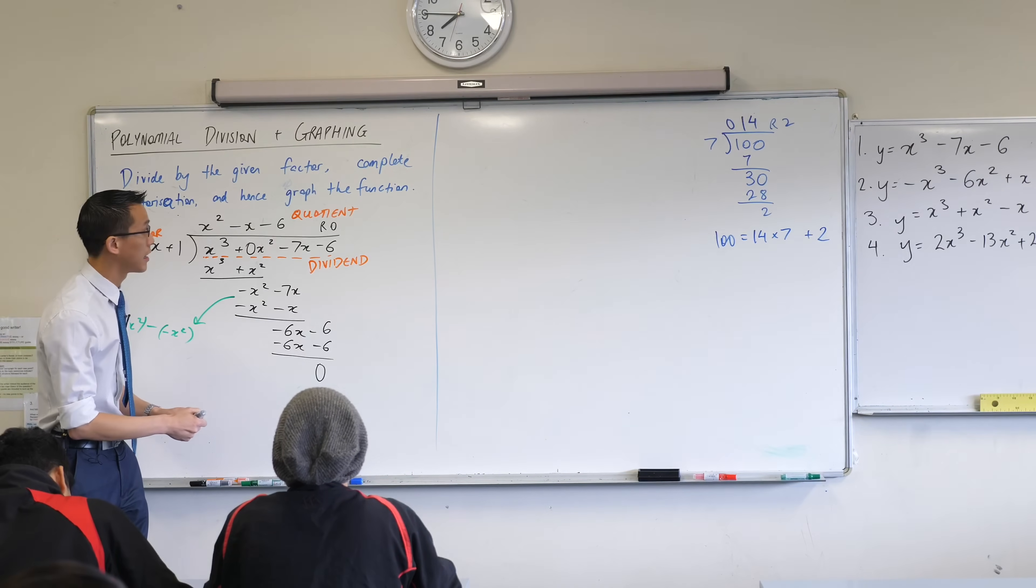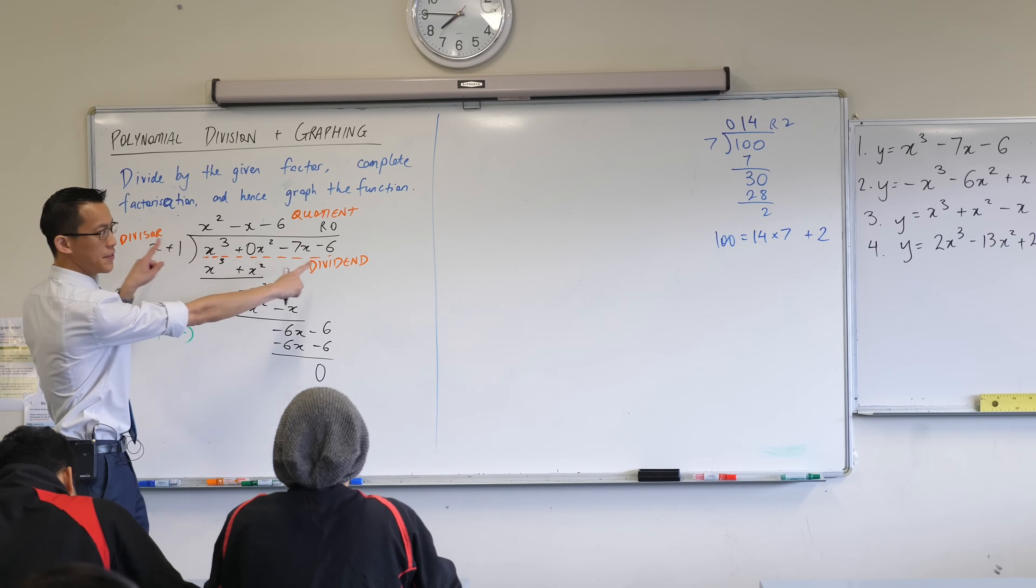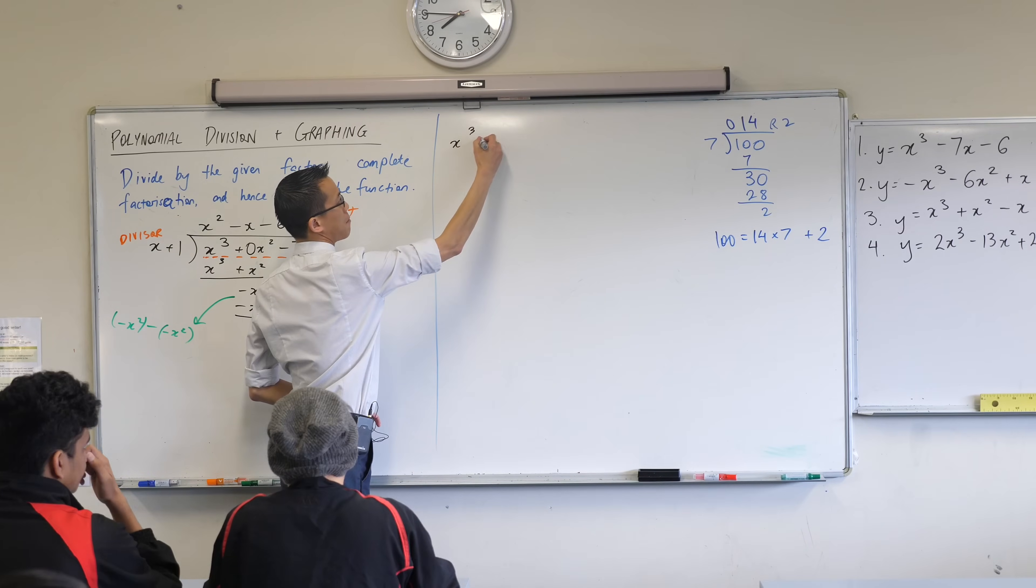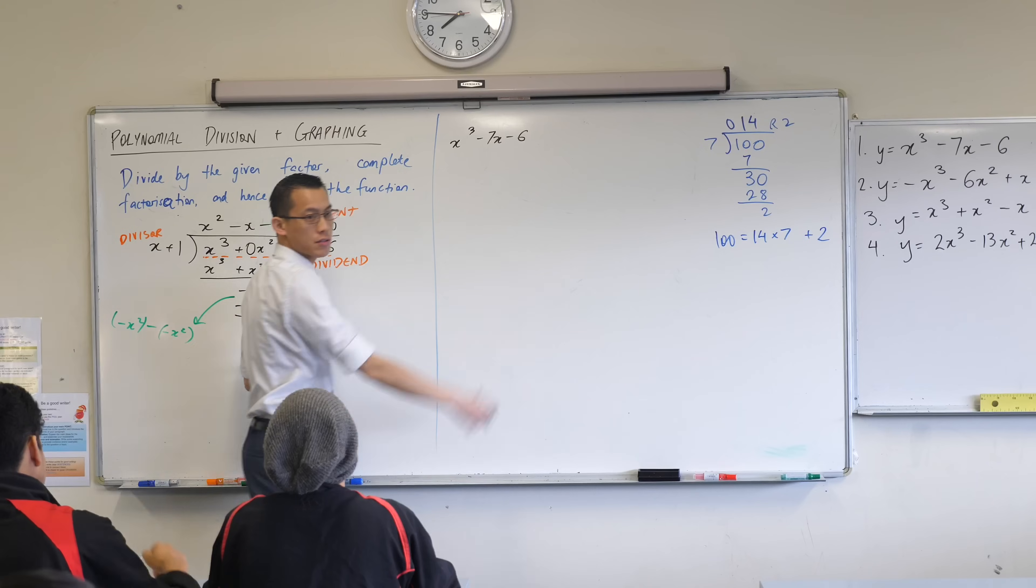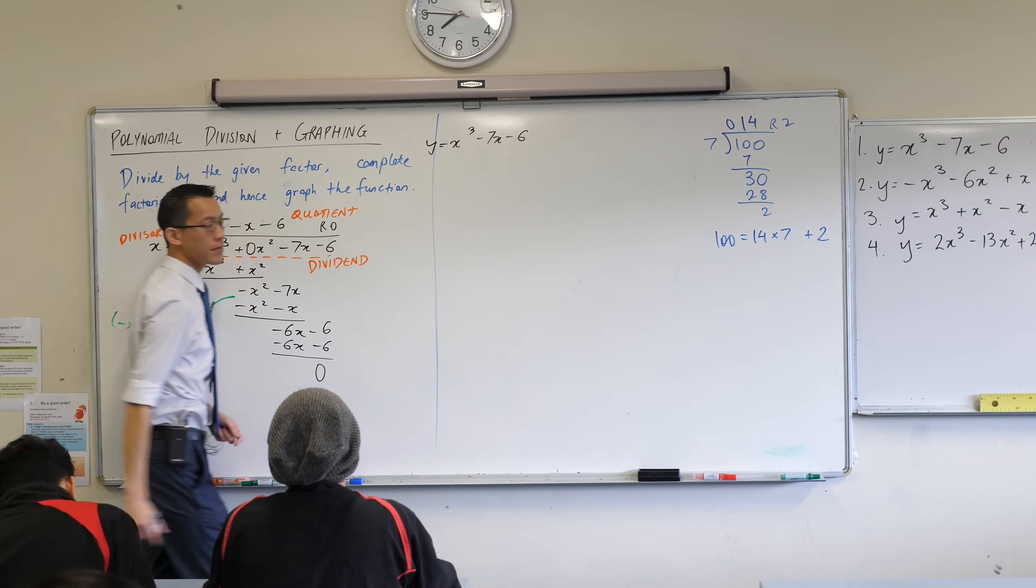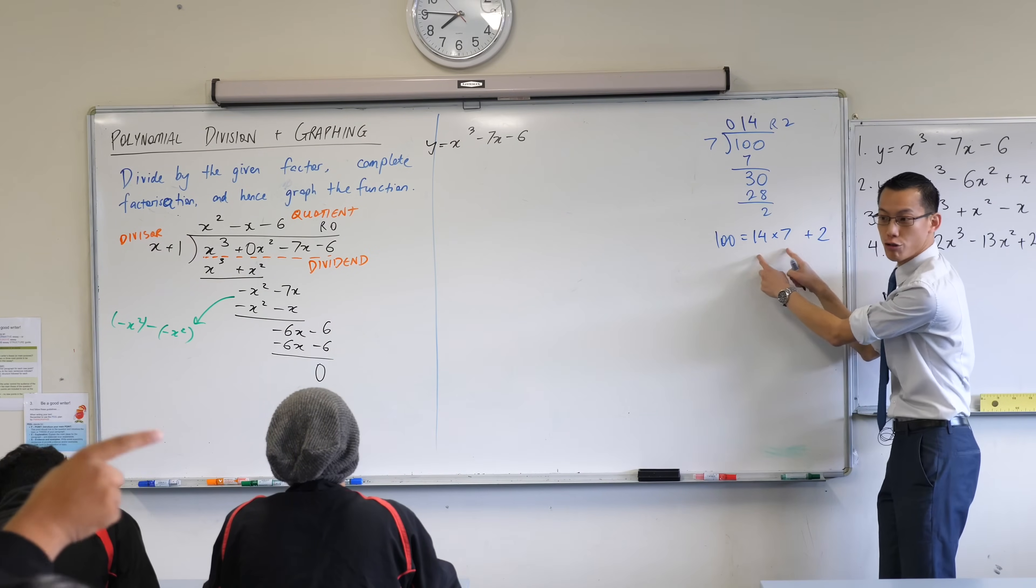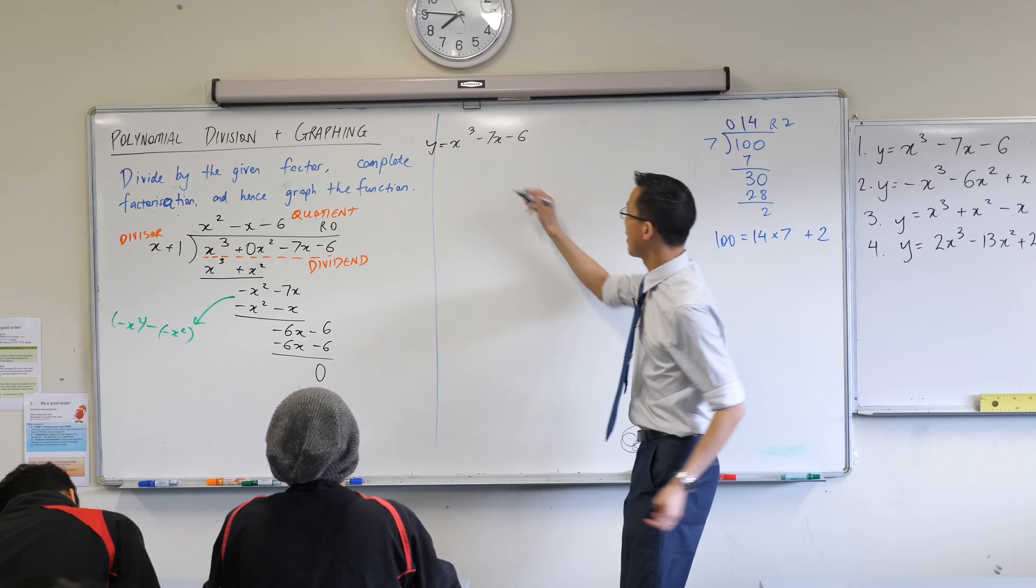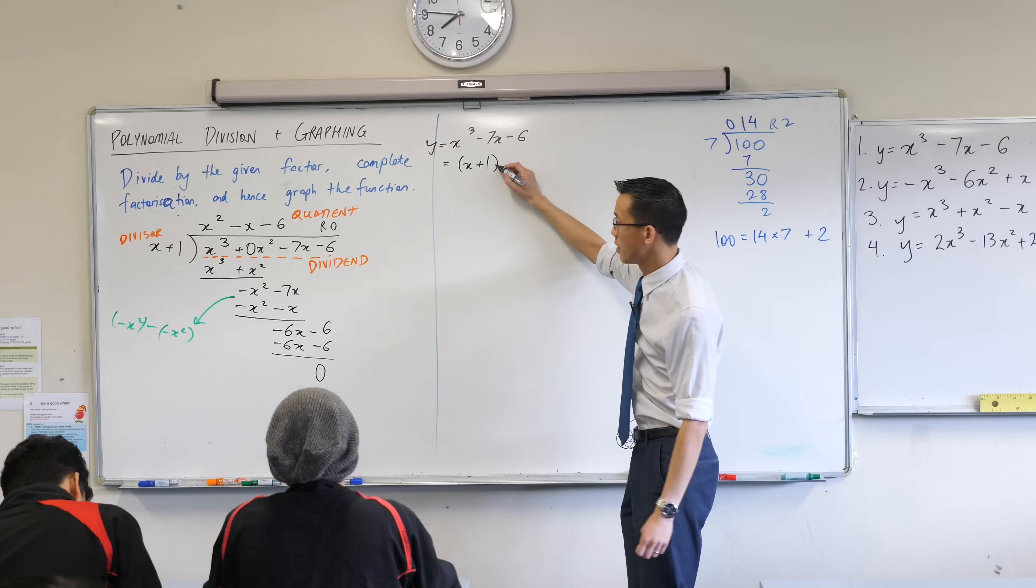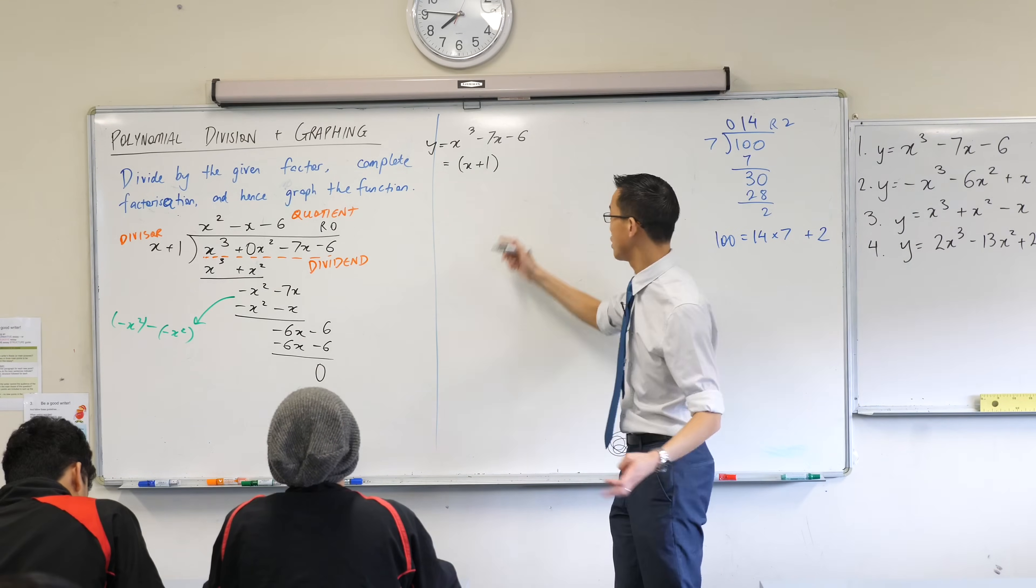Now, I can make a similar statement over here with this polynomial, arranging the divisor, dividend, quotient, and remainder. Here's the way we're going to write it down. We start by saying the dividend, that's the 100, the thing that was being divided out. It was x cubed minus seven x minus six. Remember that? That was y. I can now break that into the two factors that I've just found. Those two factors were x plus one and, have a look, x squared minus x minus six.